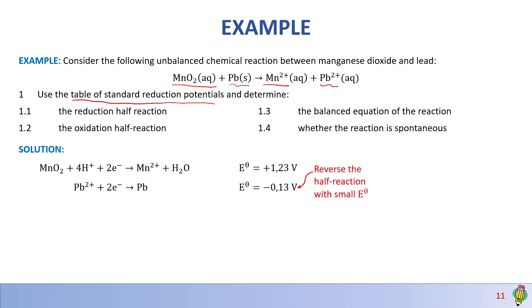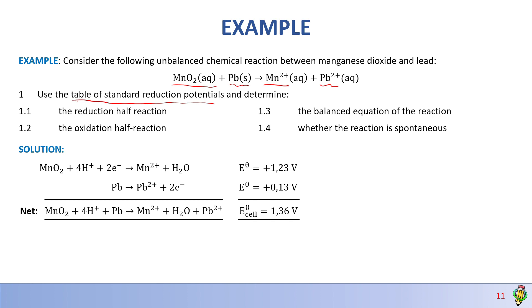To determine which is reduction and which is oxidation, we compare the two E° values: the most positive one stays as is (reduction), and the smaller one is reversed. Here, the Pb half reaction is reversed, becoming Pb → Pb²⁺ + 2e⁻, and its E° becomes positive. For the net ionic reaction we cancel the electrons and combine reactants and products. MnO₂ is reduced — it is a strong oxidizing agent occurring at the cathode. Lead is oxidized — it occurs at the anode.